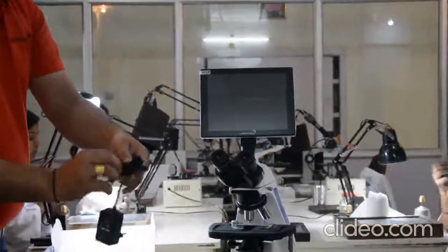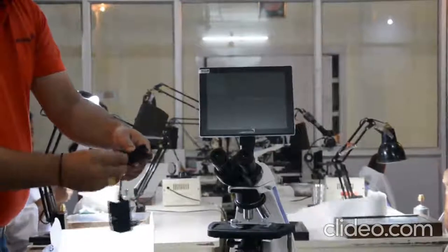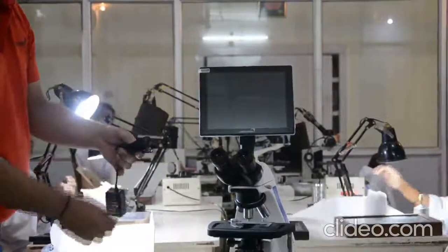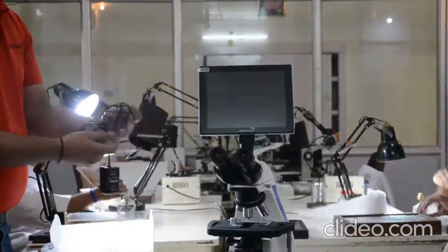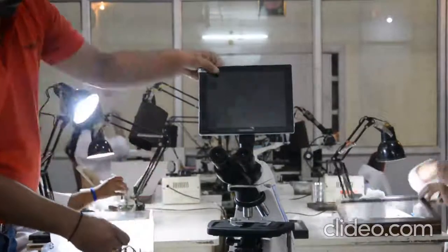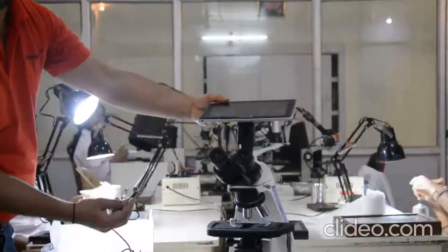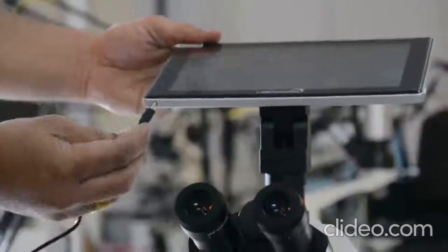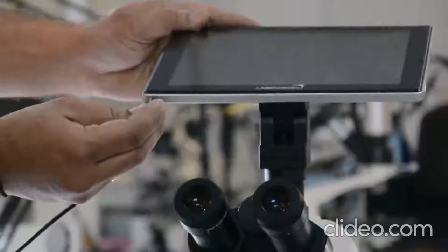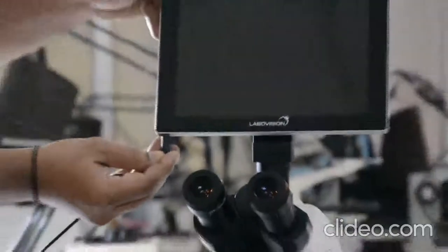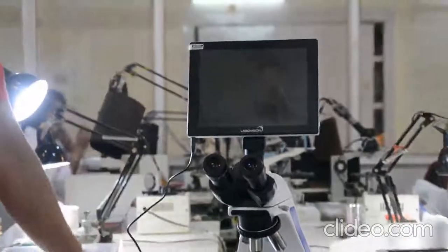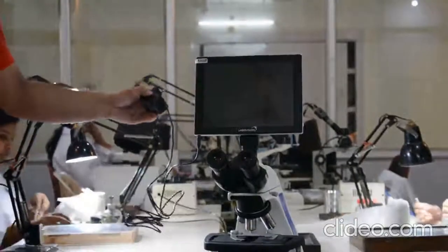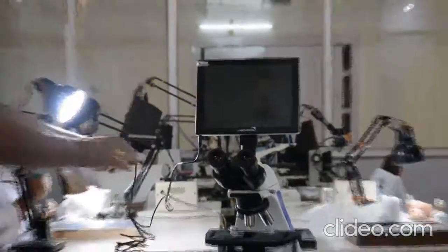We will put the power cord of the LCD screen. There is a slot which is mentioned. Yeah, this is the slot. We have to put the box in it. And you put the power cord in the socket.